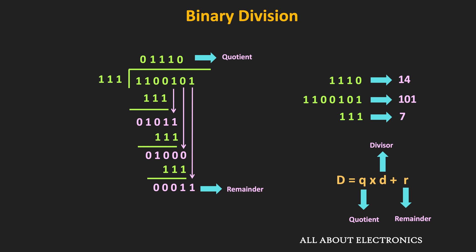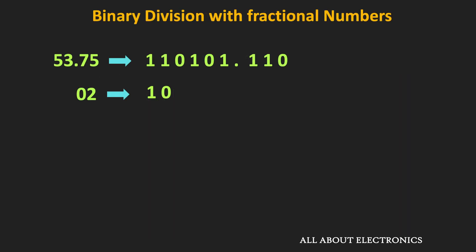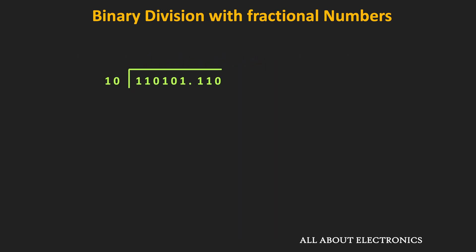Now let us see how to perform division on fractional binary numbers, considering the case where the dividend is a fractional number and the divisor is an integer. Let's say the dividend is 53.75 and the divisor is 2. This is the equivalent binary representation of the two numbers. Since the divisor is 2 bits, we compare it with the first 2 bits of the dividend. Since 11 is greater than 10, we can perform the subtraction, so in the quotient we write 1. After subtraction, the result is 01.